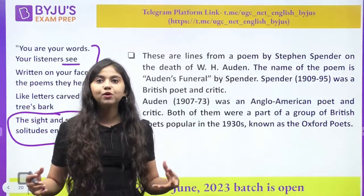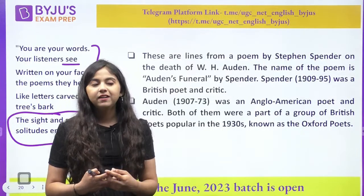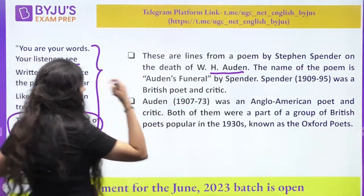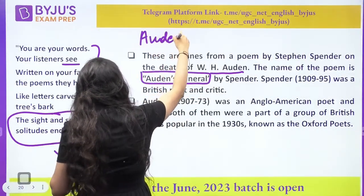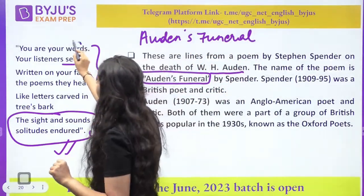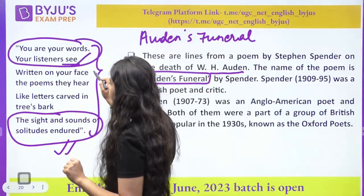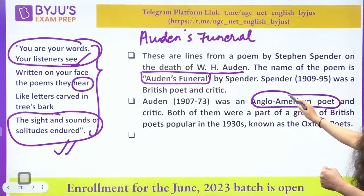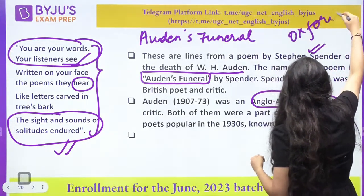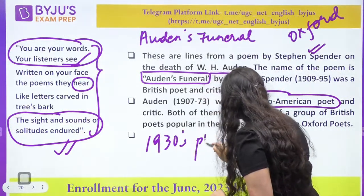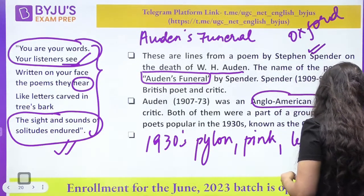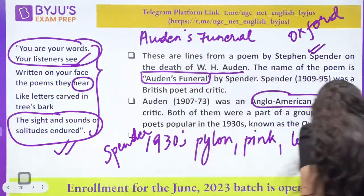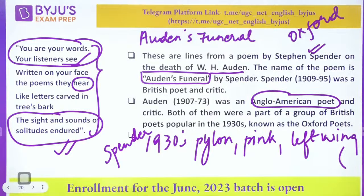What are we able to see — Stephen Spender on the death of a very important patriarch of 20th century poetry, W. H. Auden, is writing: 'You and your words, your listeners see, written on your face, the poems they hear, like letters carved in trees' bark, the sight and sounds of solitudes endured.' The poem is Auden's Funeral. Auden is the Anglo-American poet and Stephen Spender is an Oxford poet — poets of the 1930s, also called the Pylon poets, also called the Pink poets, also called left-wing poets. Stephen Spender is given multiple titles like these.